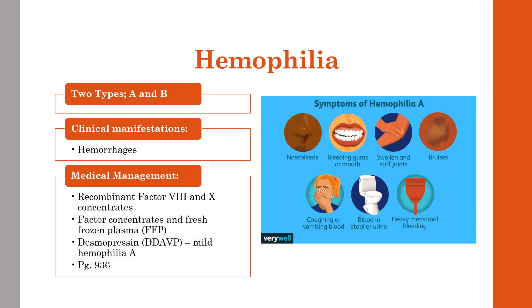Our last two disorders are inherited bleeding disorders: hemophilia and von Willebrand disease. Hemophilia has two forms — A and B — which are clinically similar but genetically different. Hemophilia A is caused by a deficiency in factor 13, a fibrin-stabilizing factor crucial in the coagulation cascade. Hemophilia B, also known as Christmas disease, is caused by a deficiency in factor 9, a protein that helps blood clots form to stop bleeding.